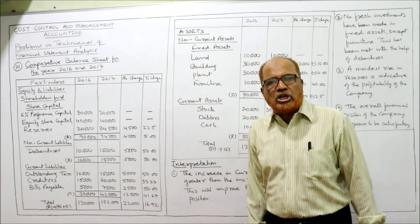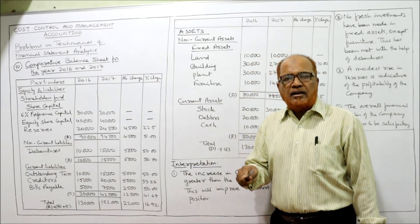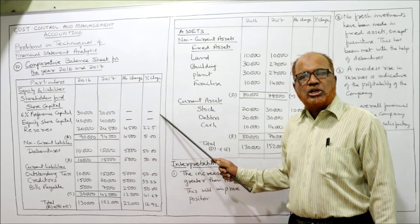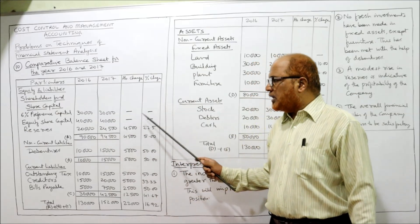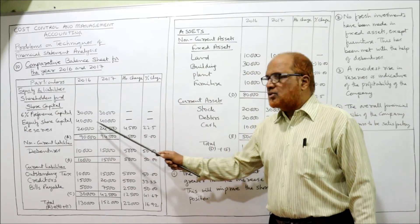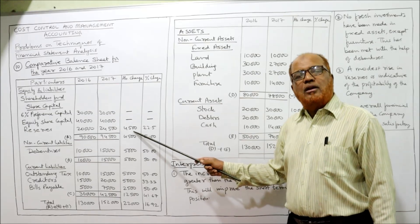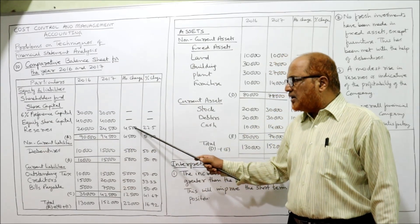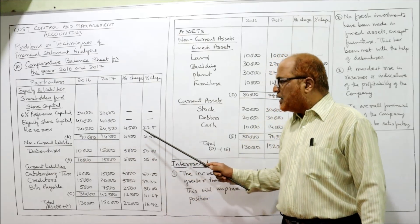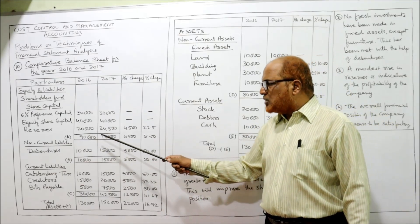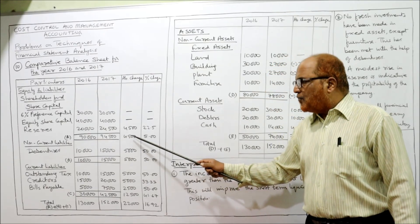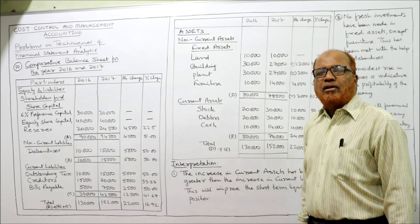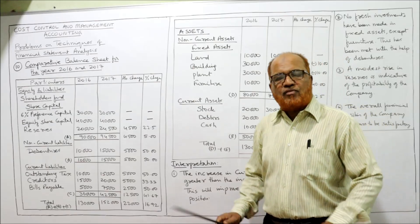Now we find the absolute change: current year value minus last year value. For example, preference share capital: 30,000 minus 30,000 equals zero — no change. Equity share capital: 40,000 minus 40,000 — no change. Reserves: 24,500 minus 20,000 equals 4,500 absolute change. Percentage change equals absolute change divided by last year value into 100, so 4,500 divided by 20,000 into 100 gives 22.5%.